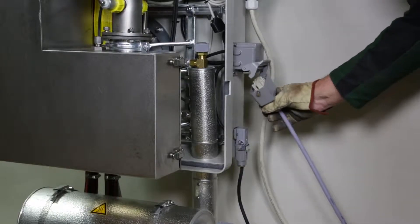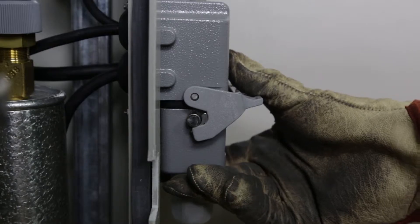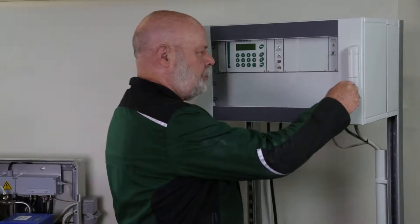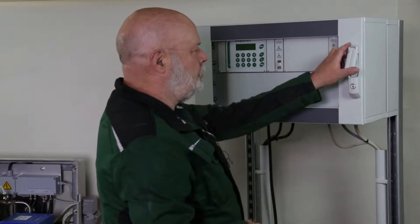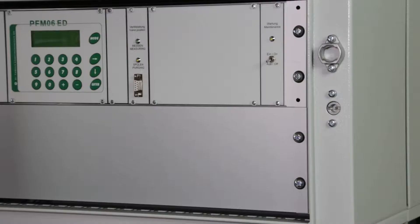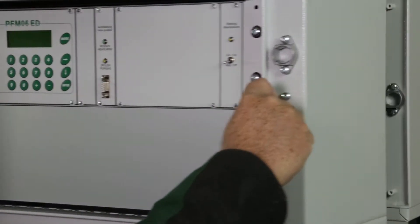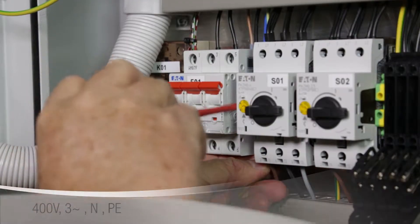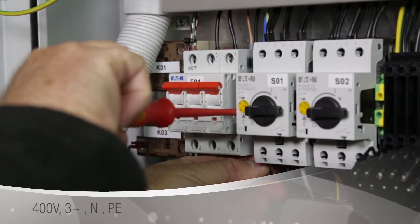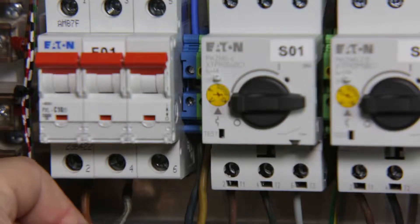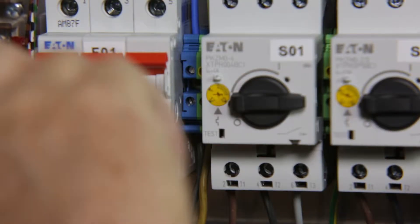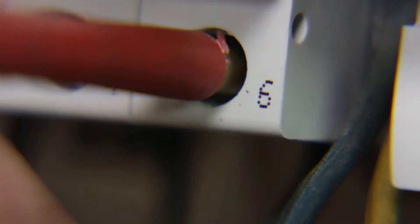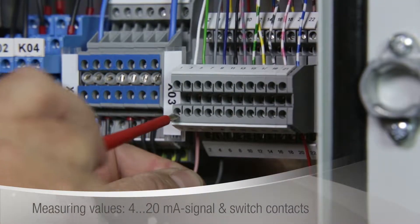Connect the hose to the measuring chamber inside. Connect the power supply. Connect the signal cable.